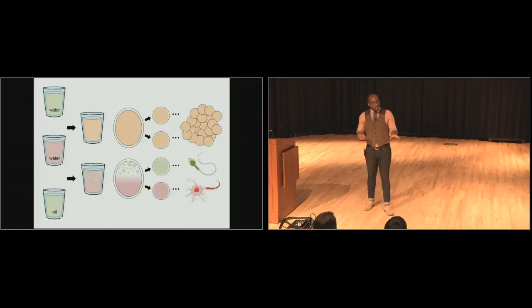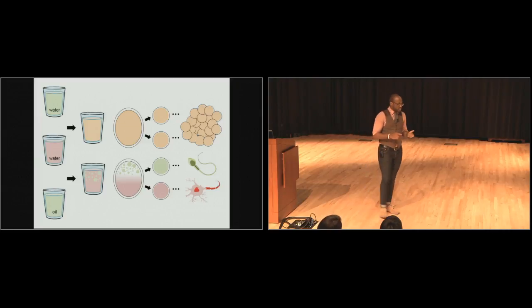Now the way the cell does this is actually very similar to our strategy with the oil and water. The problem for the cell though, is that it has to go from these things already being mixed to them being separate, which means that some of the things in the cell have to change from being like water to being like oil. So how do you change something that was like water into something that's like oil?